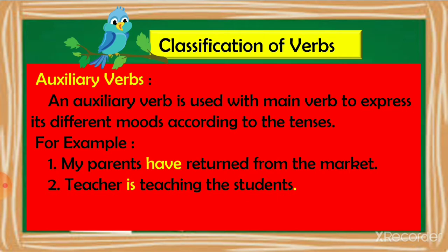The next type of verb is auxiliary verbs. Look at the sentences: my parents have written from the market; teacher is teaching the students. In these sentences, the highlighted words have and is are helping verbs which extend the meaning of the main verb. The main verbs here are written and teaching respectively. Have and is act as helping verbs and extend the meaning of the main verb. Helping verbs are also known as auxiliary verbs. An auxiliary verb is used with a main verb to express its different moods according to the tenses.